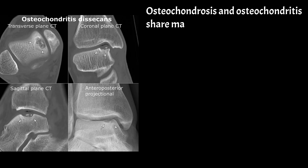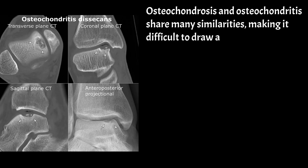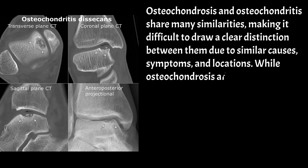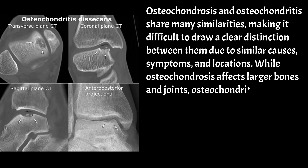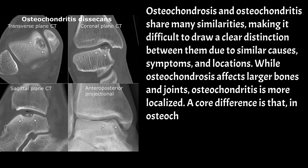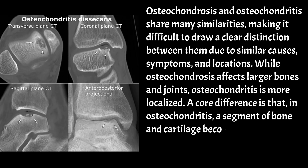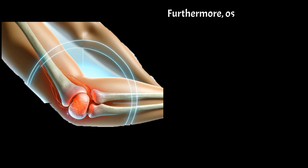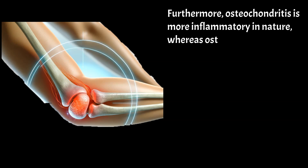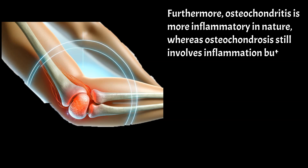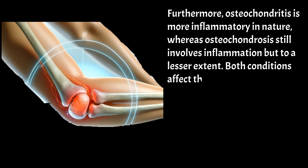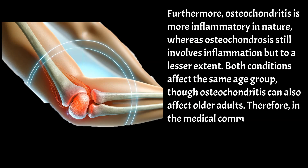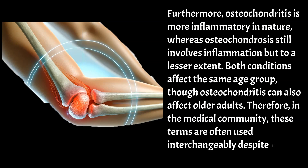Osteochondrosis and osteochondritis share many similarities, making it difficult to draw a clear distinction between them due to similar causes, symptoms, and locations. While osteochondrosis affects larger bones and joints, osteochondritis is more localized. A core difference is that in osteochondritis, a segment of bone and cartilage becomes separated from the surrounding tissue due to a lack of blood supply. Furthermore, osteochondritis is more inflammatory in nature, whereas osteochondrosis involves inflammation but to a lesser extent. Both conditions affect the same age group, though osteochondritis can also affect older adults. Therefore, in the medical community, these terms are often used interchangeably despite minor differences.